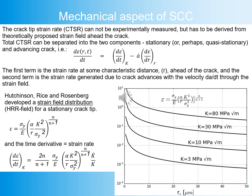The mechanical aspects of stress corrosion cracking are now shown. Crack tip strain rate is almost impossible to measure directly, so theory and empirical formulas are used. Crack tip strain rate can be separated into two components: a stationary crack component and an advancing crack component. We apply HRR fields for the stationary crack tip, which can be expressed as a time derivative — that is, strain rate.